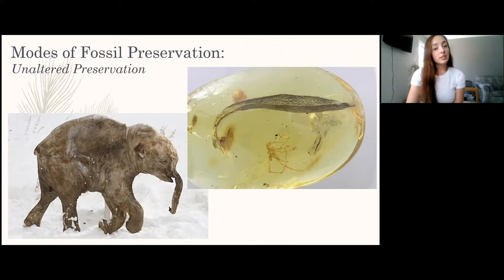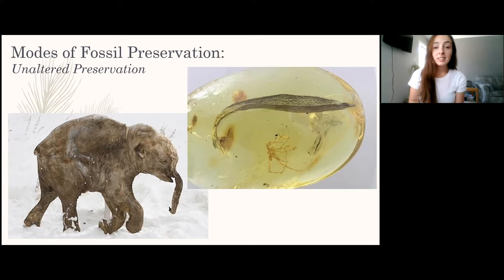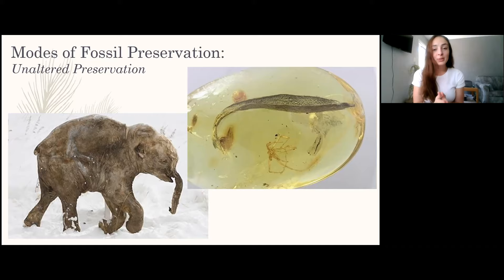Unaltered preservation includes frozen mammoths or any organism that becomes frozen. Another great example is insects or feathers preserved in amber — this is one of the ways we know dinosaurs had feathers. These unaltered preservation modes are the most helpful for understanding geologic history because they are unaltered, so we don't have to make any guesses.